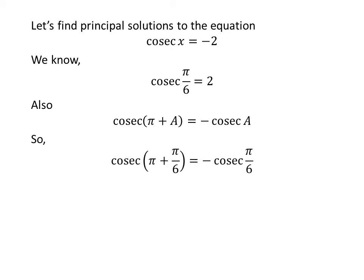Application of the above identity implies that cosecant of pi plus pi upon 6 is equal to minus cosecant of pi upon 6. As pi plus pi upon 6 is equal to 7 times pi upon 6, and plugging in the value of cosecant of pi upon 6 gives us cosecant of 7 times pi upon 6 is equal to minus 2.